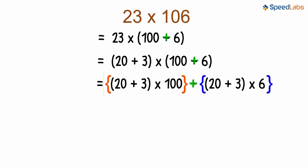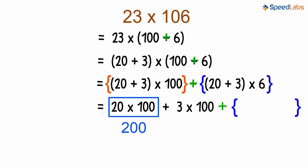We will begin to solve the first part. What's the first step? Correct! We will expand the brackets like this. Hence, we get the two products as 2000 and 300.